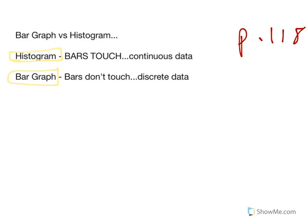A bar graph and a histogram both have bars - that's the similarity. The difference is, if you notice, in bar graphs the bars don't touch. We have discrete data. This means like how many goals were made in the soccer game. You can't score two and a half goals or two and a third goals. You can score one goal, two goals, three goals. Discrete, like counting numbers.